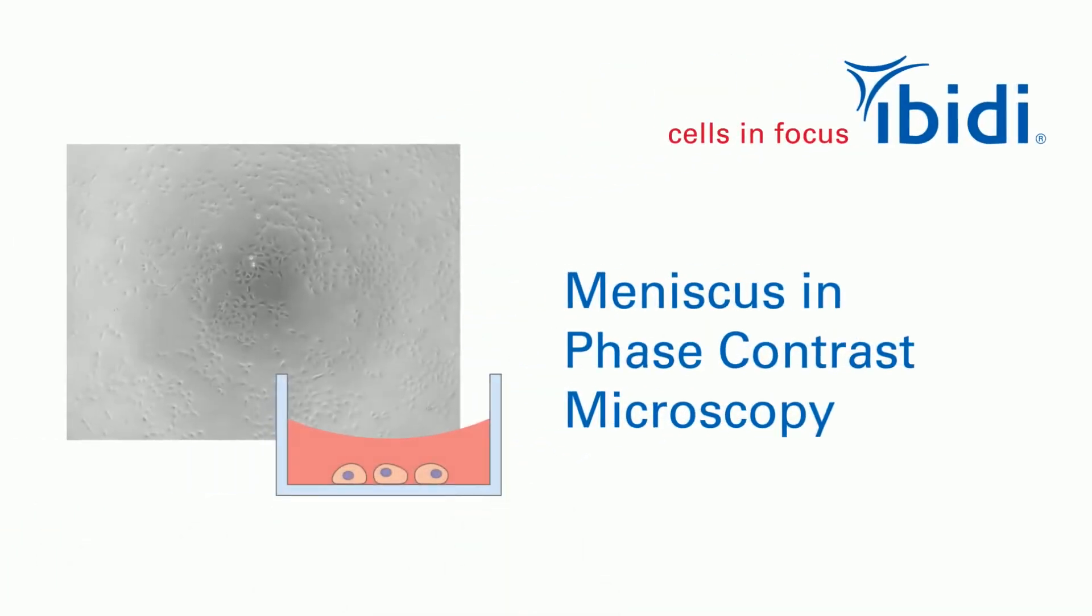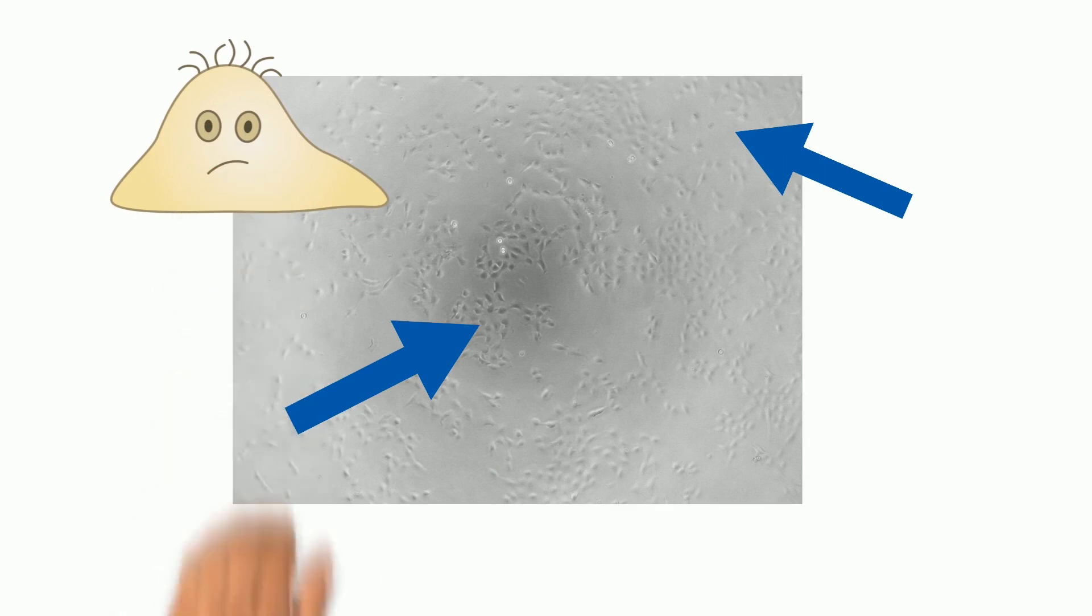Meniscus in phase contrast microscopy simply explained. Do your phase contrast images always look like this? Do they have a sharp center but blurry edges with low contrast? This can be frustrating, but there is a simple explanation for this.